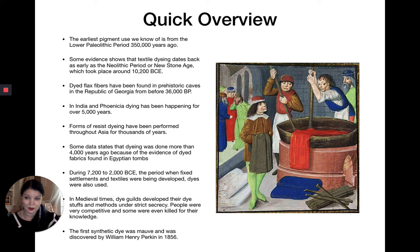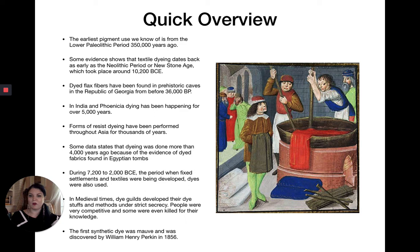The first synthetic dye was the color mauve, and it was discovered by William Henry Perkin in 1856. That put an end to a lot of the competitiveness of dyeing and the secrecy.